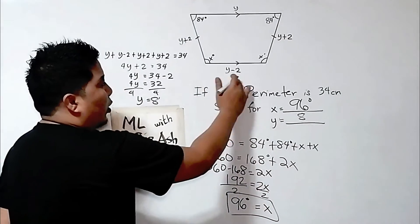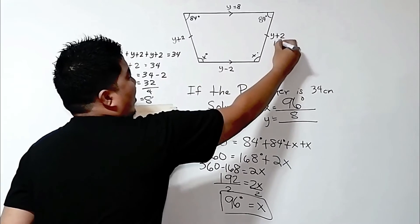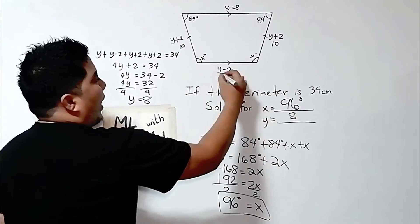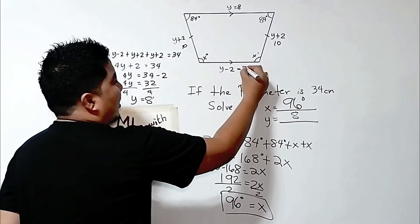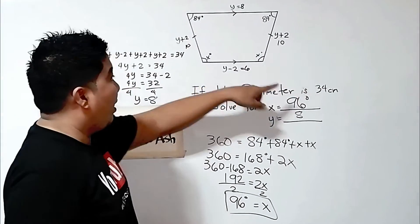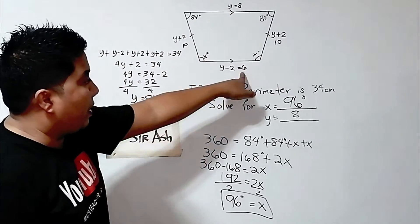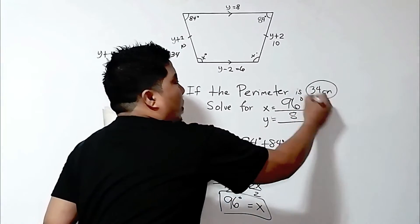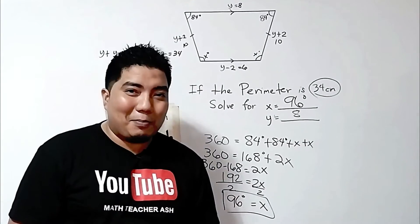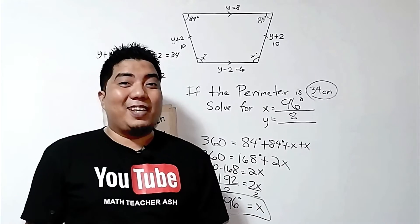So if you want to get the actual measurements: this side is 8, this is 10 because 8 plus 2 is 10, and this is 6 because 8 minus 2 is 6. So if we add 10 plus 10, that is 20, plus 8 is 28, plus 6 is a total of 34 centimeters, which is your perimeter. So we have answered all of the questions of this problem. Easy, right?